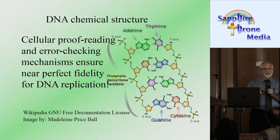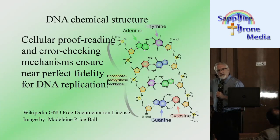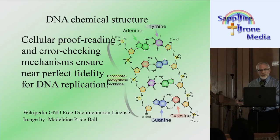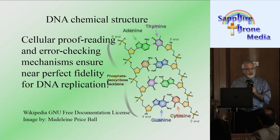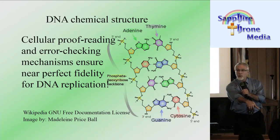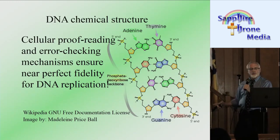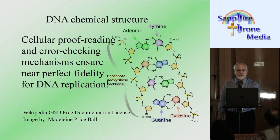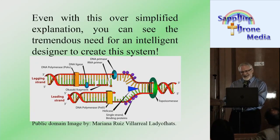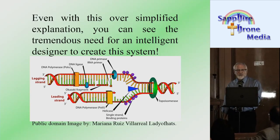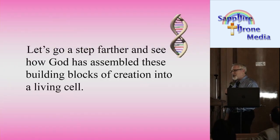Cellular proofreading and error checking mechanisms ensure near-perfect fidelity for DNA replication. This thing is intelligent enough to read and find out what's going on in the code that it's writing — after it wrote the code, it went back to look to see if it was correct. God is awesome. Even with this oversimplified explanation, you can see the tremendous need for an intelligent designer to create this system.